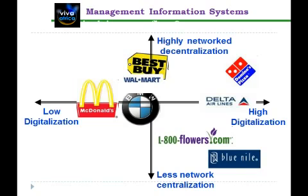An example of highly networked decentralization is Best Buy — or even Walmart or Asda in the UK. You can go online, select the specific shop you want to buy from, place an order, and either go into the store to pick it up or have it delivered to you. There is high decentralization with many shops all around, and it is also networked with their online version. You can interrelate the online experience with the offline experience — you can even search within the online database to find whether the product you want is available in your local shop.